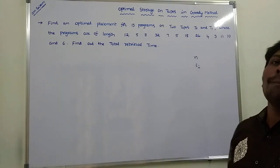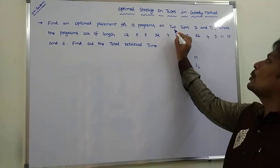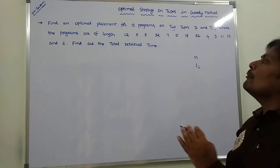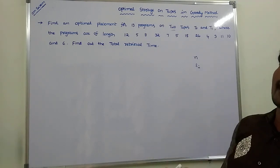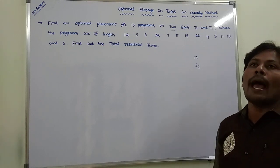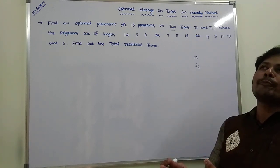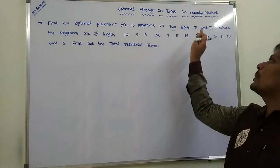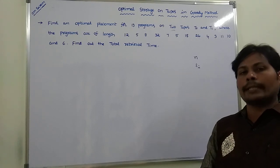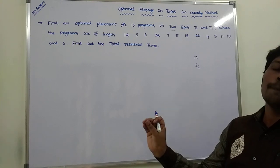This problem involves n number of programs that can be assigned to two tapes, T0 and T1. We need to determine how to assign these n number of programs to two tapes, T0 and T1, in an optimal way. After assigning these programs to T0 and T1, we then find out the total retrieval time. This is our optimal storage on tapes problem.